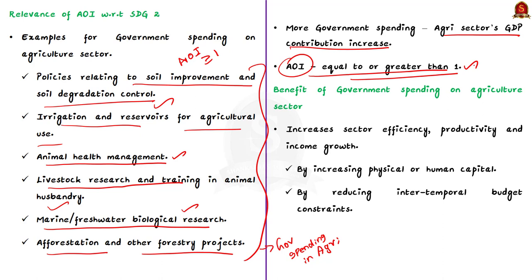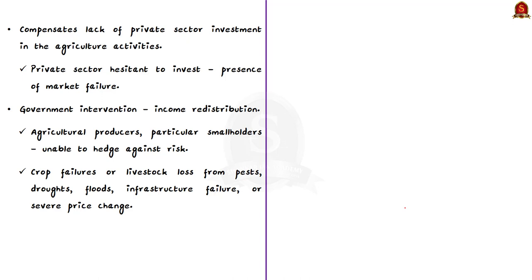The benefits of government spending on agriculture: firstly, it increases the sector's efficiency, productivity, and income growth by increasing physical or human capital. Secondly, it compensates for the lack of private sector investment in agriculture activities — the private sector is hesitant because of the presence of market failure in the agriculture sector.